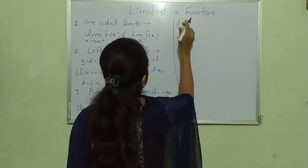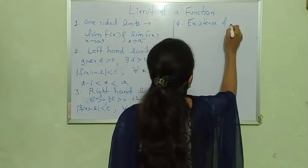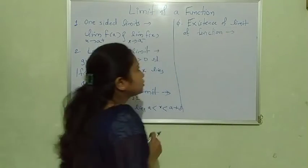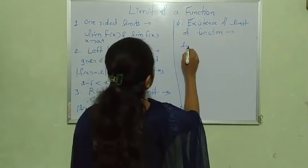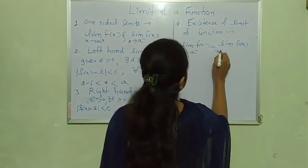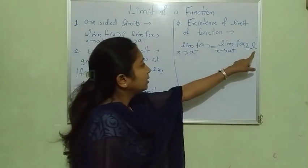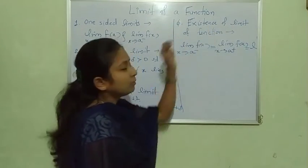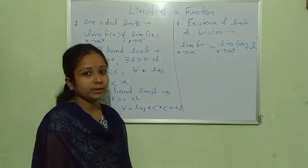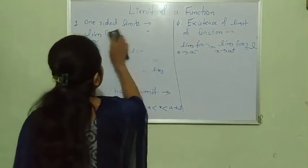The existence of limit of a function: we say the limit of a function exists when the left hand limit equals the right hand limit — that is, limit of f(x) as x tends to a minus equals limit of f(x) as x tends to a plus equals L. If both are equal to the same value, the limit exists. If left hand limit is not equal to right hand limit, the limit does not exist.